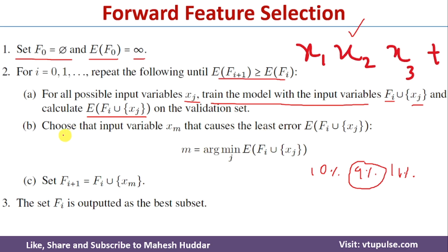We choose the input variable xm that causes the least error. Out of these three, x2 is causing the least error, so we select x2. Then Fi+1 is set equal to the previous subset plus the selected feature x2.